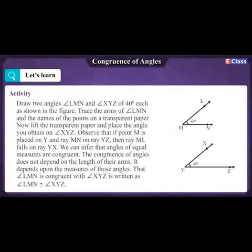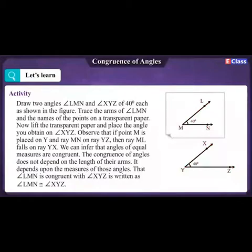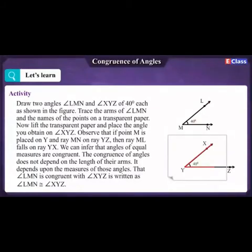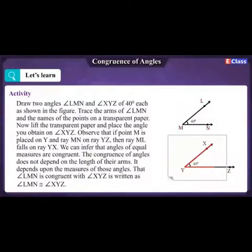Let's see one activity. Draw two angles — angle LMN and angle XYZ — of 40 degrees each as shown in the figure. Trace the arms of angle LMN and the names of the points on a transparent paper. Now lift the transparent paper and place the angle obtained on angle XYZ. Observe that if point M is placed on Y and ray MN on ray YZ, then ray ML falls on ray YX. We can infer that angles of equal measures are congruent.